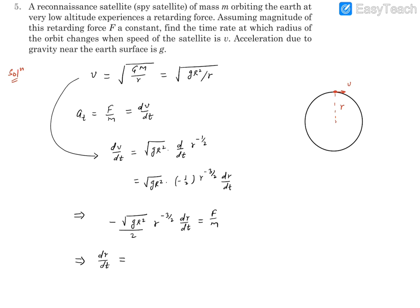If you write dR by dt, the rate at which the radius changes is going to be equal to minus twice F by m, and this becomes R raised to power 3 by 2 divided by square root of gR². That becomes the rate of change of radius over time. Since this satellite is very close to the earth surface, smaller r is approximately equal to capital R, so velocity becomes under root gR.